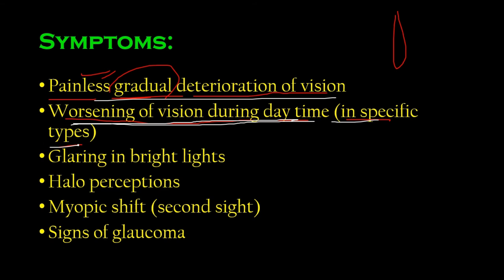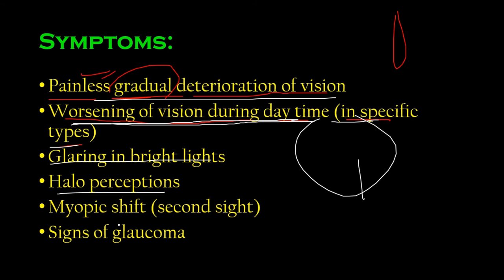So: painless gradual vision loss, worsening of vision during daytime specifically in nuclear and posterior subcapsular types, and glaring in bright lights. There is also halo perception — a ring of light around light sources, as discussed in the previous lecture.